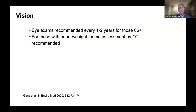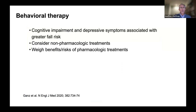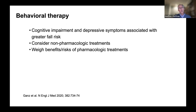Vision and hearing are also critical to stay on top of. Eye exams are recommended every one to two years for older adults; those with poor eyesight should get a home assessment by an occupational therapist. Regarding behavioral therapy, depressive symptomatology is associated with significantly increased fall risk. One might consider non-pharmacologic treatments or weighing benefits and risks of pharmacologic treatments, in consultation with a geriatrician or physician. Note that SSRIs used to treat depression can also exacerbate fall risk.